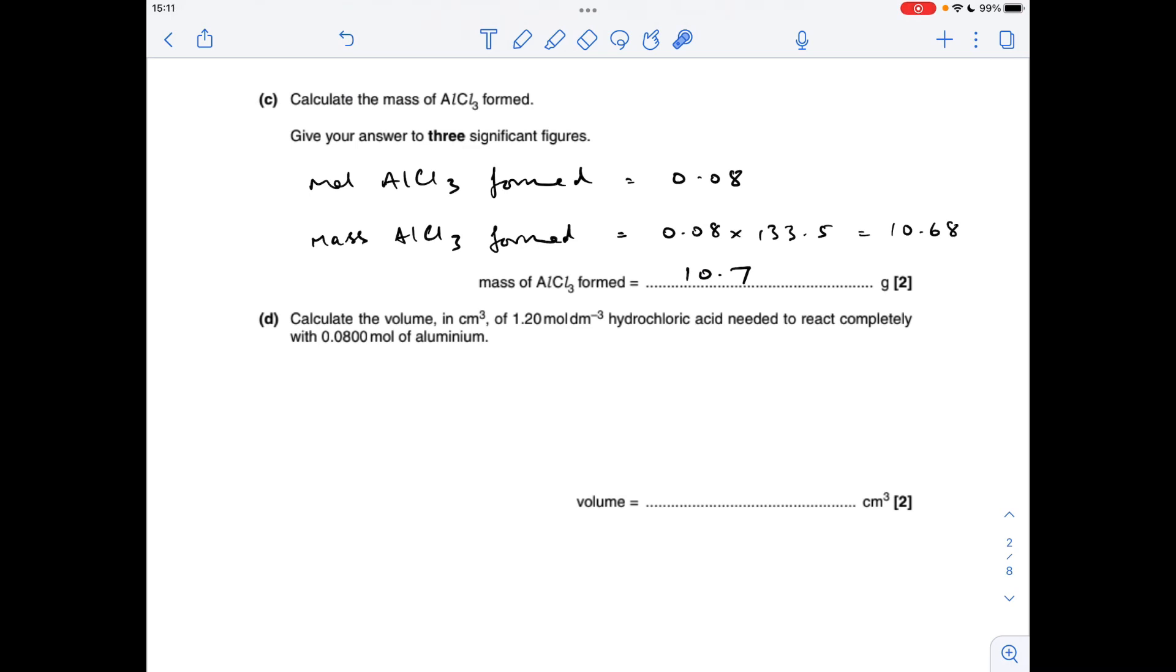Part C, the mass of aluminium chloride formed. The moles of aluminium chloride is going to be the same as the moles of aluminium—it's a 1 to 1 ratio between them. So it's 0.08 moles of aluminium chloride formed. If we multiply that by its MR, we get the mass. It's a calculator value; three significant figures is 10.7 grams.